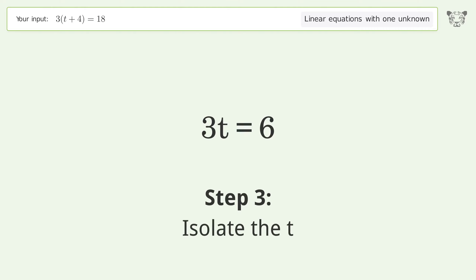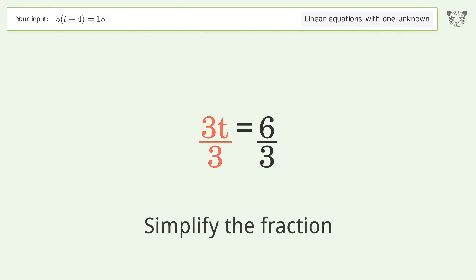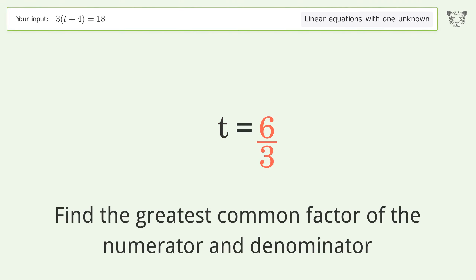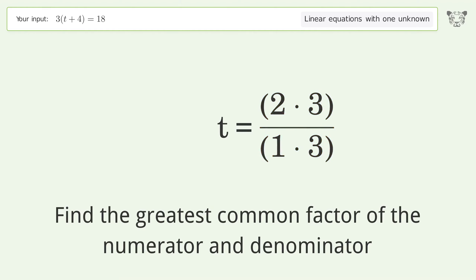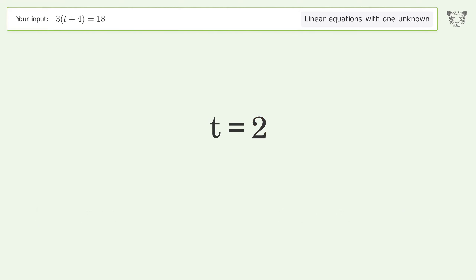Isolate t by dividing both sides by 3, then simplify the fraction. Find the greatest common factor of the numerator and denominator, factor it out, and cancel it. And so the final result is t equals 2.